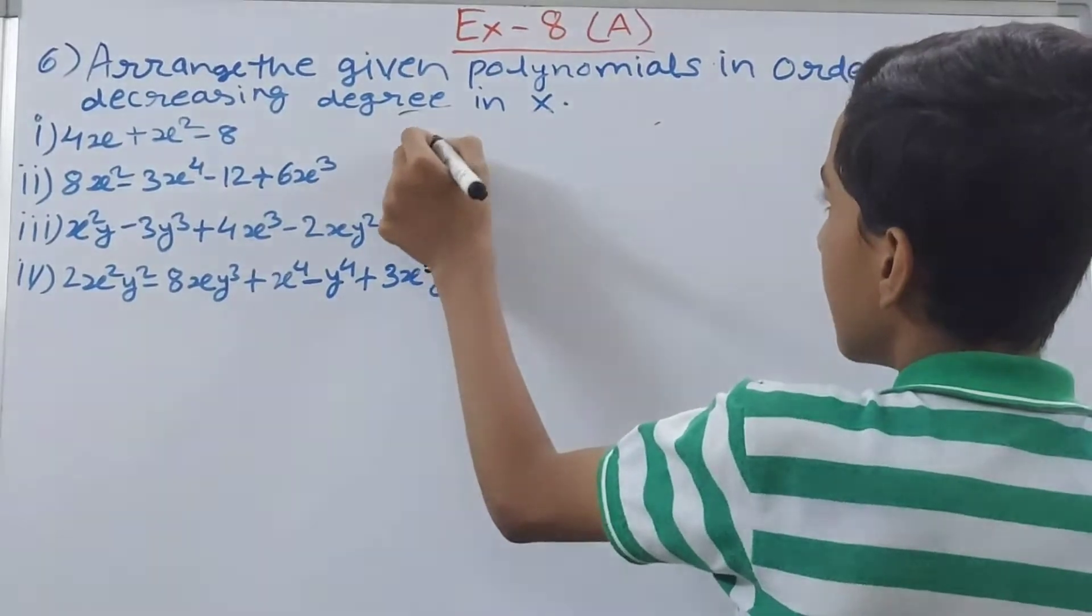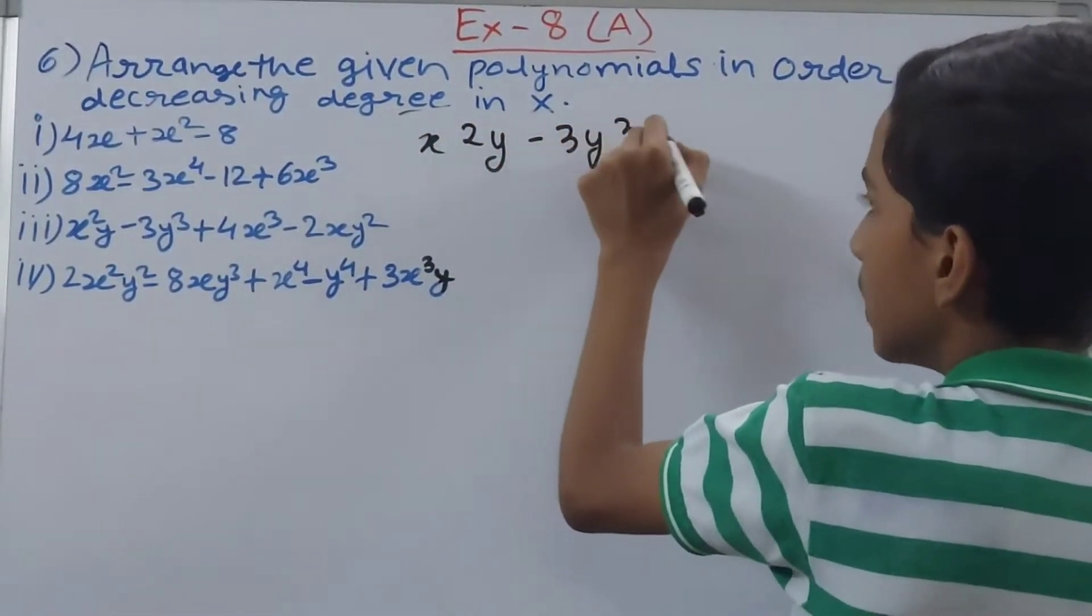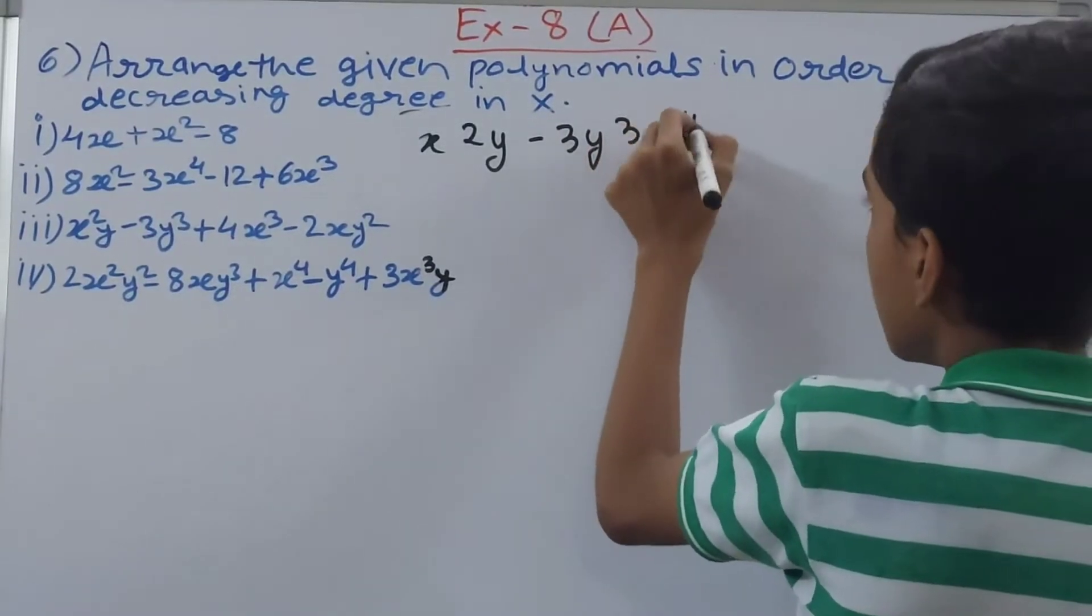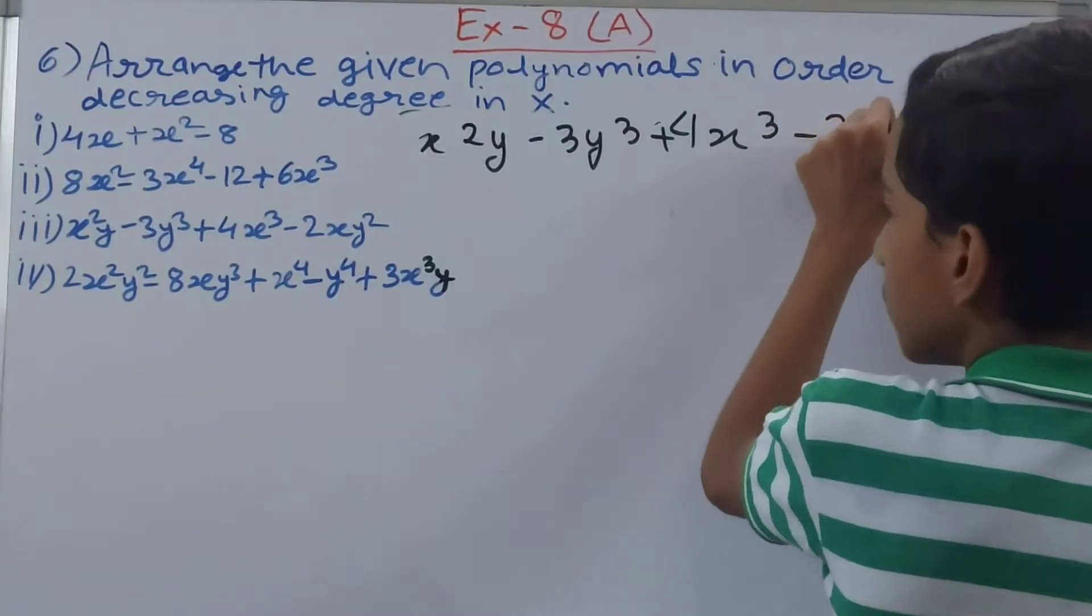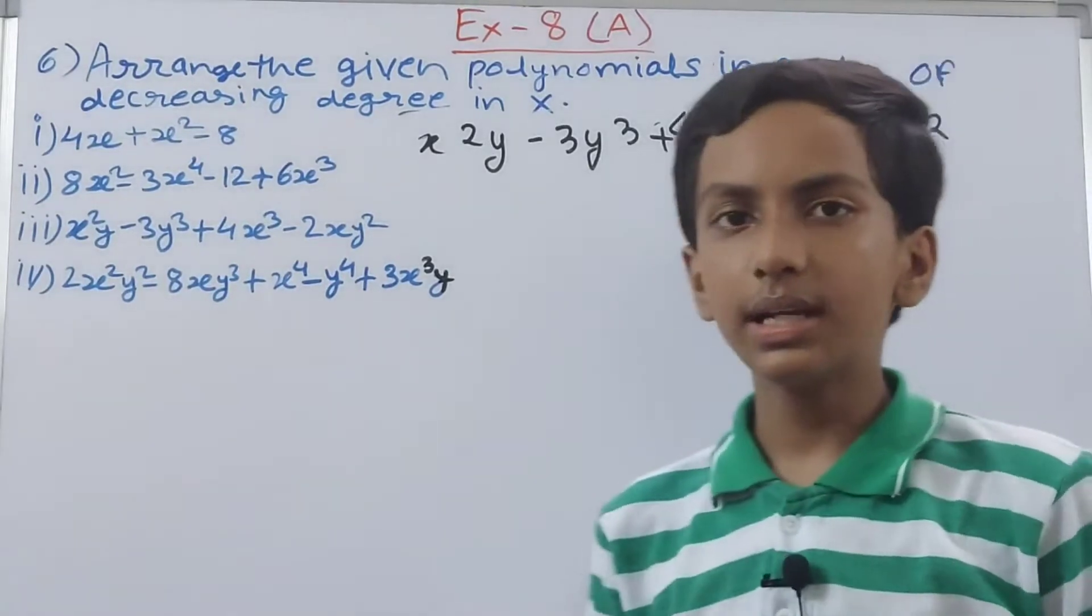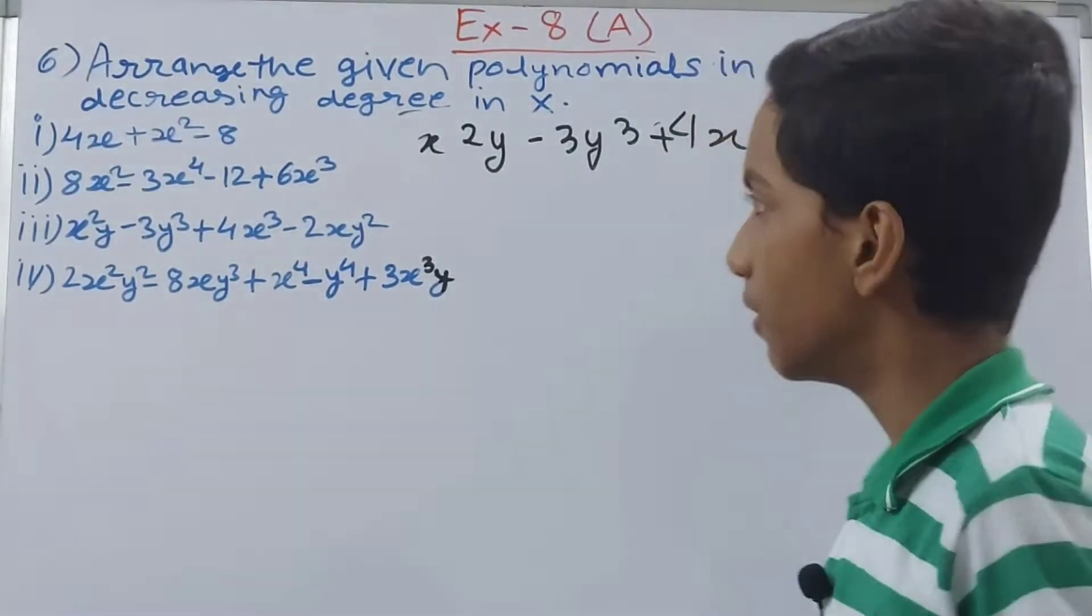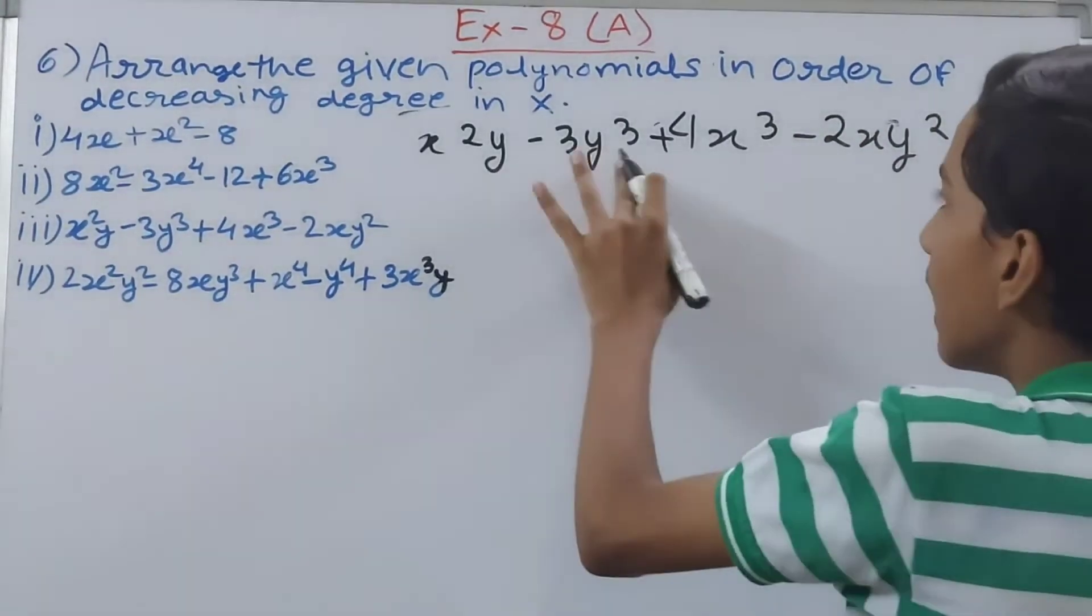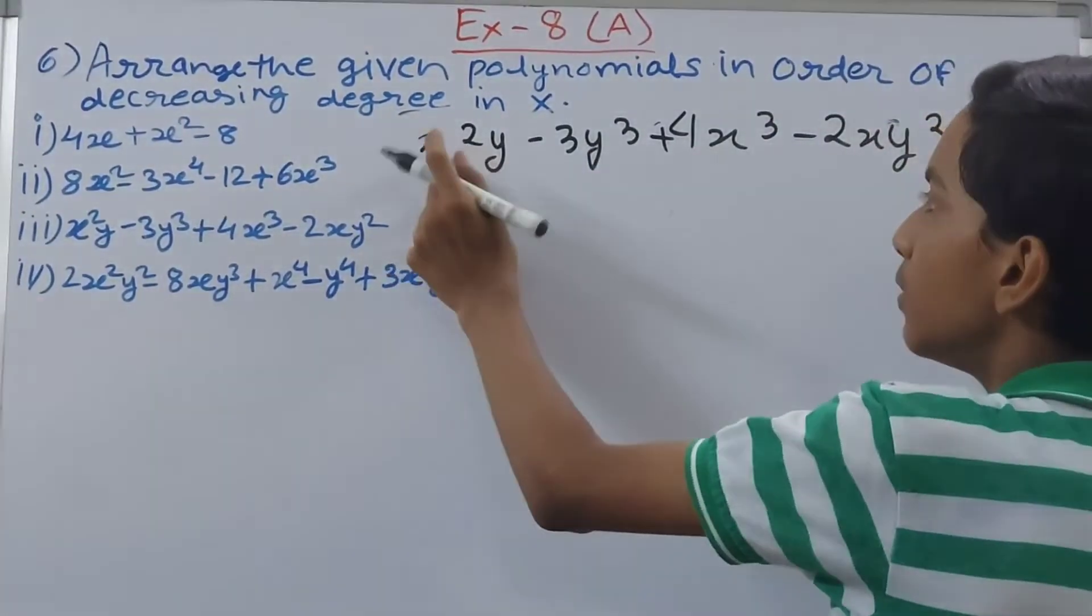Now we move on to the next part and this one is x square y minus 3y cube plus 4x cube minus 2xy square. Now in this also you can see we only look at the powers or exponents of x, not any other variable.